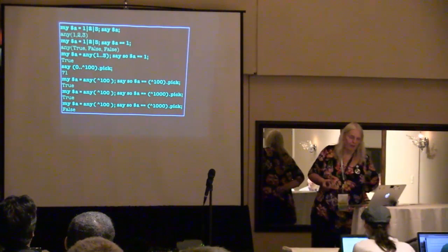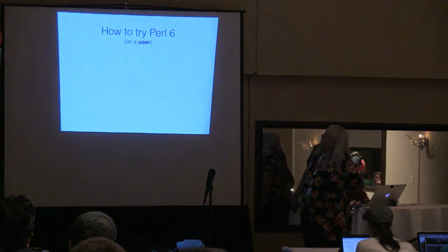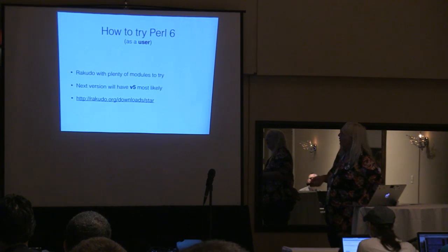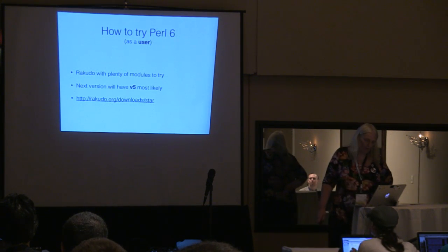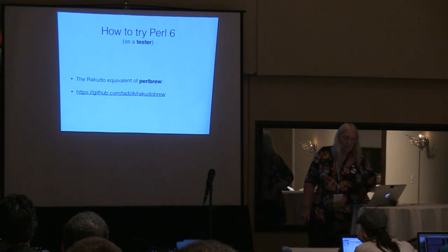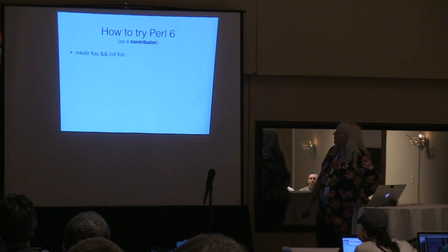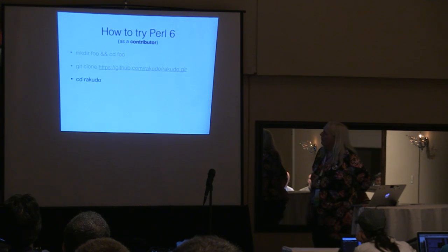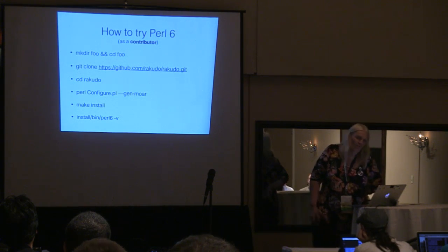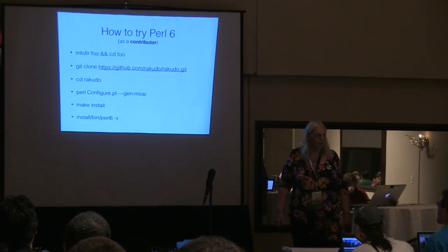So how can you try Perl 6? This is Rakudo Star, with plenty of modules to try. Next version will have v5. Get it at rakudo.org/downloads/star. If you are a tester of Perl 6, you can get something equivalent to Perl Brew, called Rakudo Brew, available on GitHub. If you want to start contributing, it's really easy: make a directory, clone Rakudo, go into the directory, do configure, then make install, and you're done. This takes about two to three minutes on any decent machine.